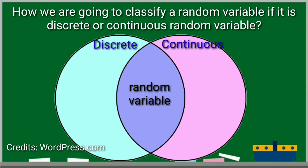In this activity, here is the guided question. How we are going to classify a random variable if it is discrete or continuous random variable? Let us answer this question by filling in the Venn diagram.